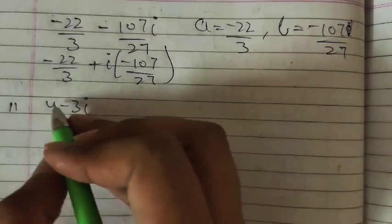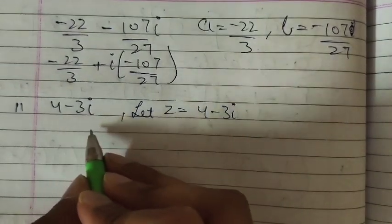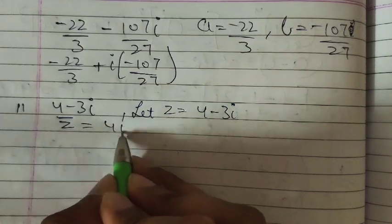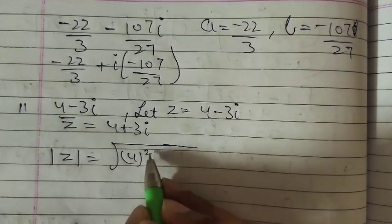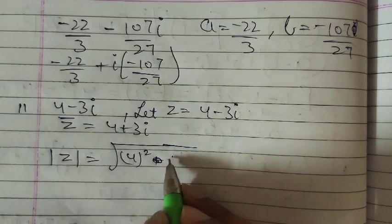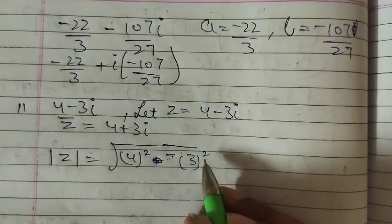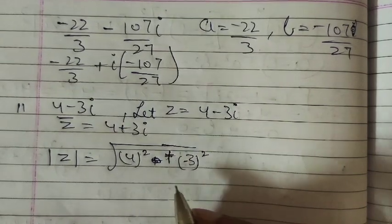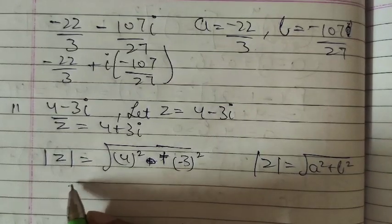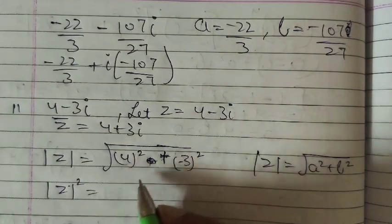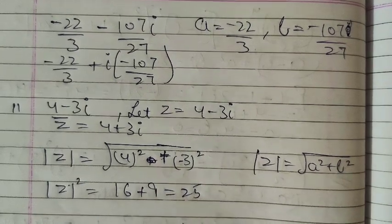In question number 11 we find the inverse of a complex number. Let z = 4 minus 3ι. The conjugate z̄ = 4 plus 3ι. Modulus squared |z|² = 4² plus (minus 3)² = 16 plus 9 = 25.